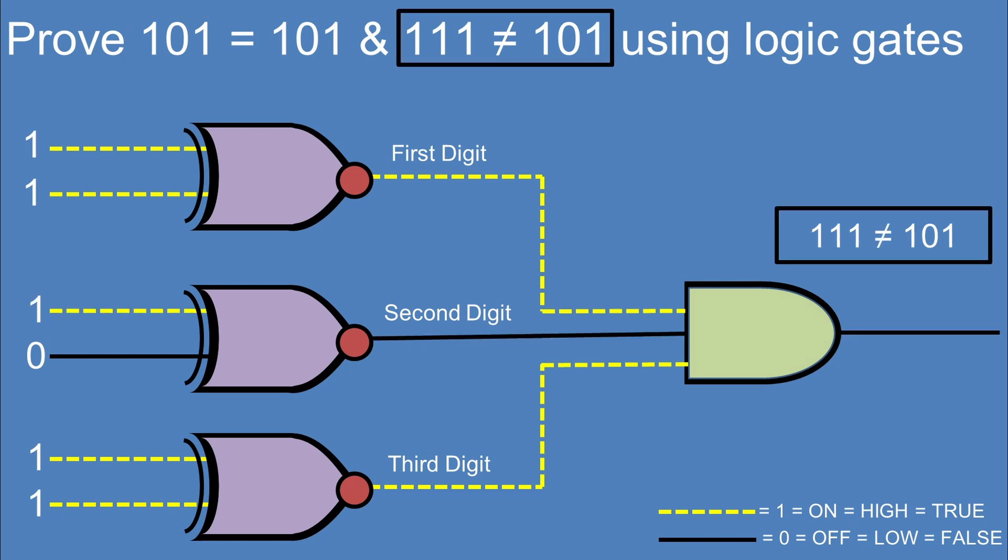Now let's feed in the 111 and the 101 to see what happens. This results in the second digit reporting an OFF state due to the inputs not being the same. So the AND gate reports an OFF signal due to all of the inputs not being ON. This translates to 111 does not equal 101.